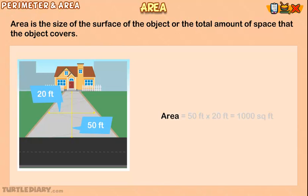Area equals 50 feet times 20 feet equals 1,000 square feet.